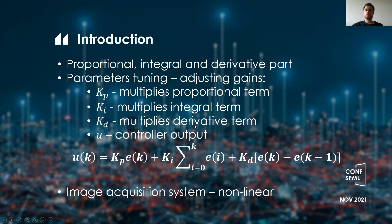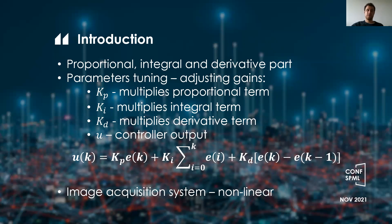The PID controller consists of three components: the proportional, integral, and derivative term. The proportional part is directly proportional to the error term, as its name suggests. The integral part is the sum of all errors that occur during the control process, while the derivative part is the difference between the current and the previous error term. The error term E enters the PID controller, then the P, I, and D terms are calculated and added together to form the control signal U. It is straightforward to tune the parameters for linear systems. However, the image acquisition system is not linear and therefore a different approach is needed.